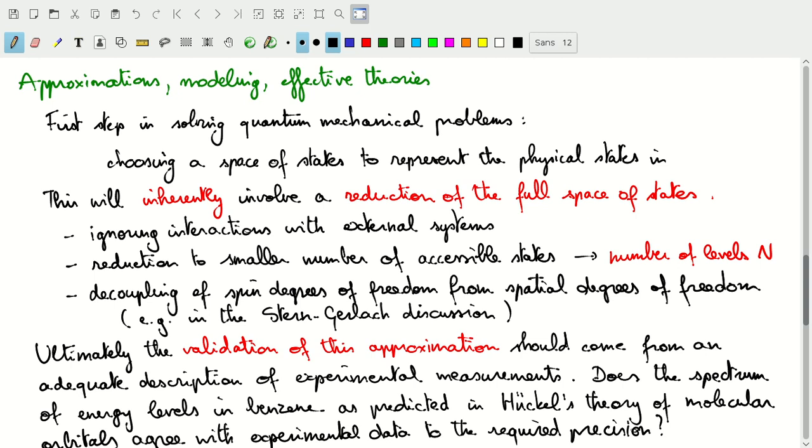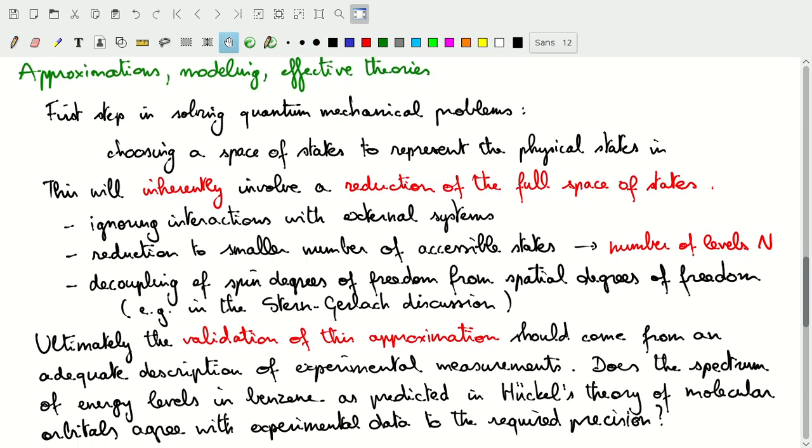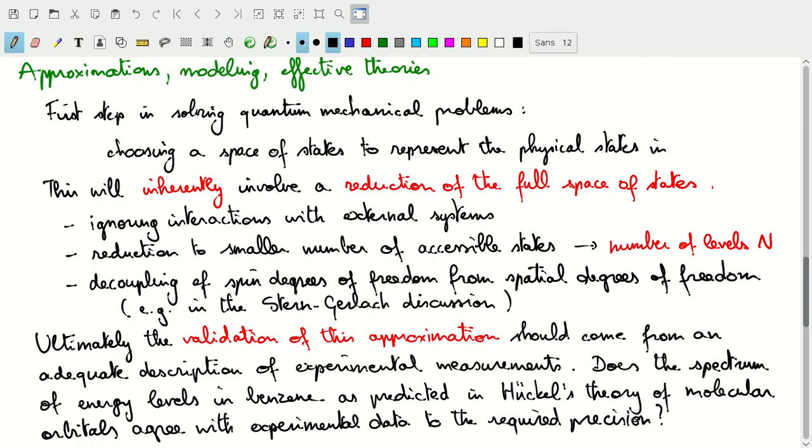So, for example, in the case of the problem we treated where, in a homework assignment where we looked at benzene, so you predict a number of energy levels using our theory of molecular orbitals. But then the ultimate test is, does this agree with the experimental data? And not just does it agree, but of course, does it agree to within a certain precision that you're interested in? If you want higher precision, maybe it's necessary to go back to this modeling step, and to not reduce the full space of states as much as you did.